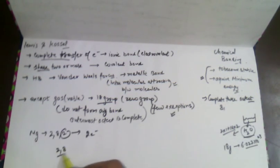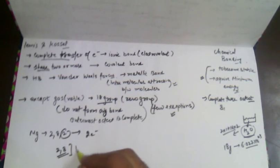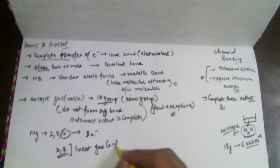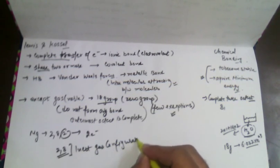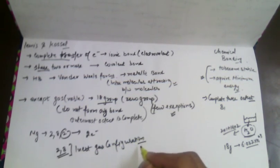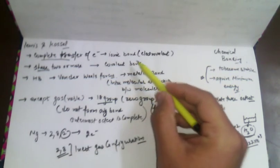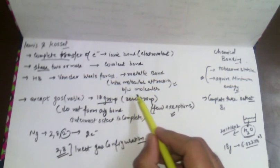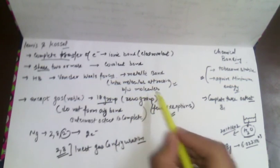When atoms complete their octet, they become stable, and when they become stable, they have minimum energy. After getting the inert gas configuration — which is known as inert gas configuration — they are able to form any type of bond: ionic bond, covalent bond, metallic bond, or hydrogen bonding, which we are going to discuss step by step.